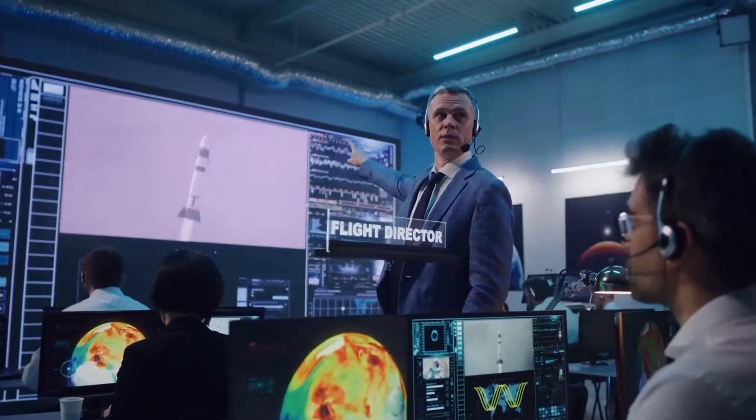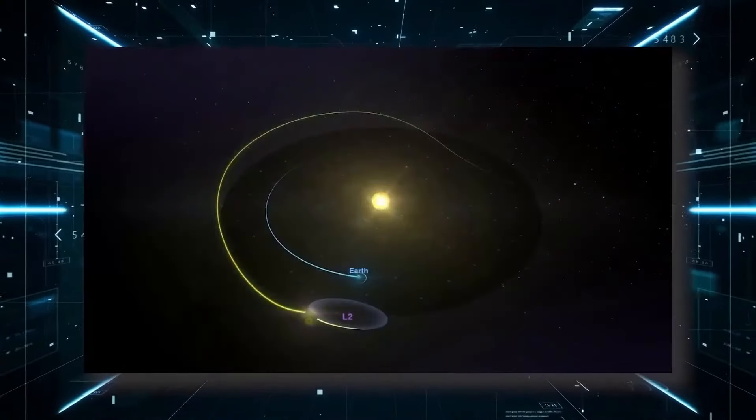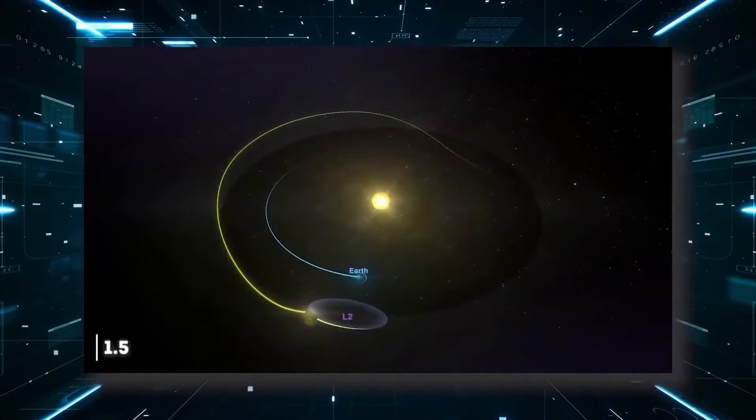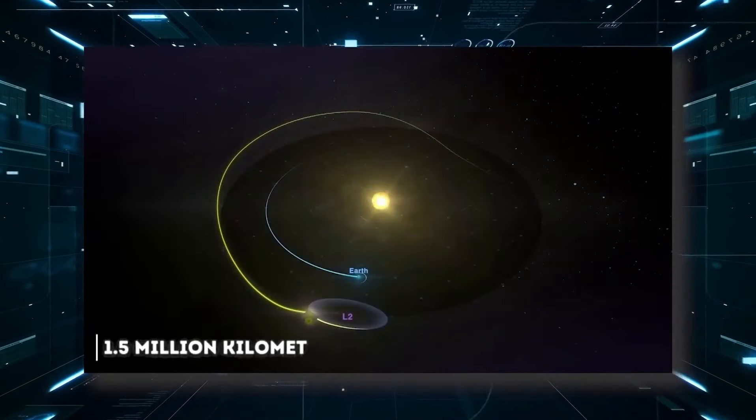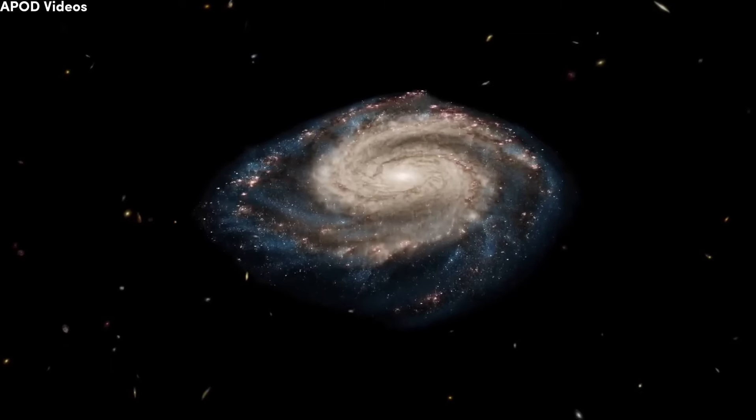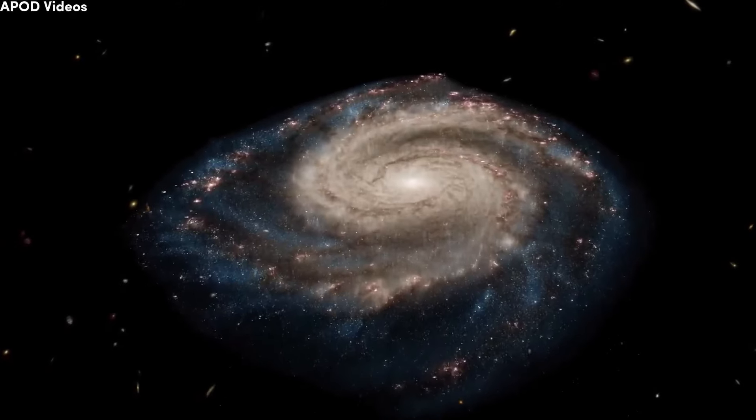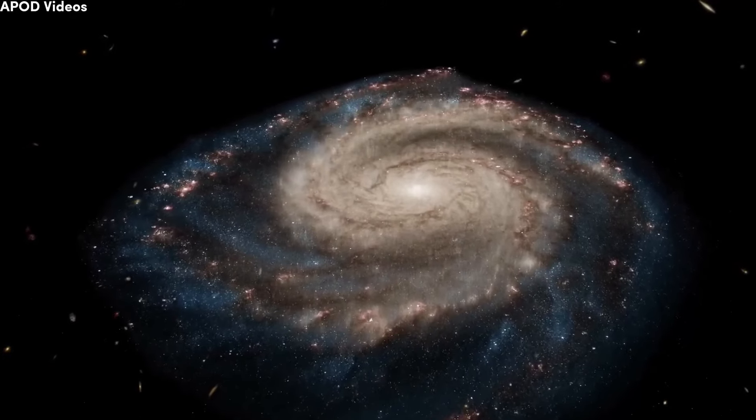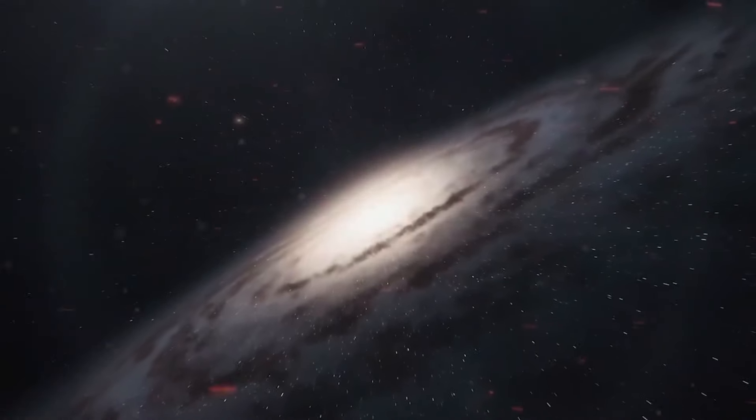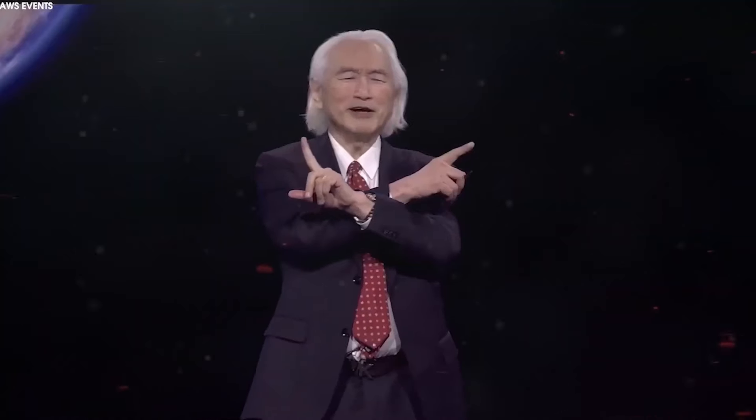The objects we're finding are as massive or larger than the Milky Way, which is astounding, said Leja, who co-published a paper last week that identified six enormous galaxies that existed just 500 million to 700 million years after the Big Bang. One of these galaxies may have amassed 100 billion times that of our Sun. Our own galaxy similarly contains many billions of stars, but it has had 13 billion years to reach its size.